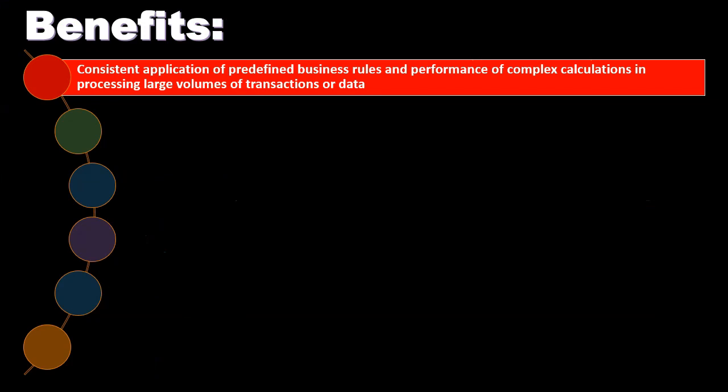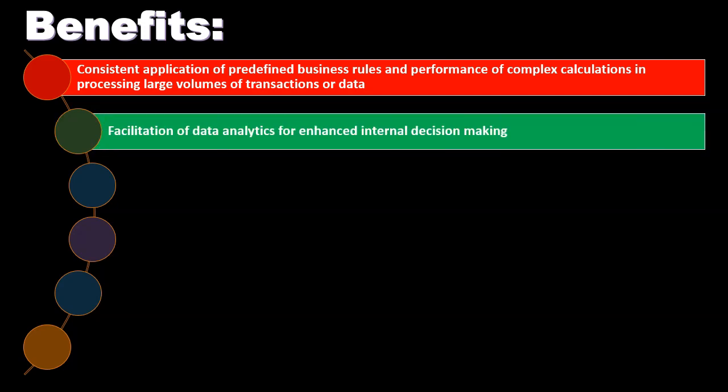Let's go through the benefits, pros, and cons of technology with regards to internal controls. Benefits include consistent application of predefined business rules and performance of complex calculations in processing large volumes of transactions or data. When thinking of large volumes of transactions, if we set up a system where they all follow the same set of rules, a database program can apply those very efficiently over a long period of time — much more efficiently than an individual can.